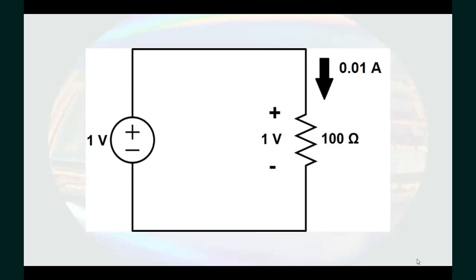So, when current enters the positive terminal of a device that uses energy, that device dissipates or absorbs positive power.